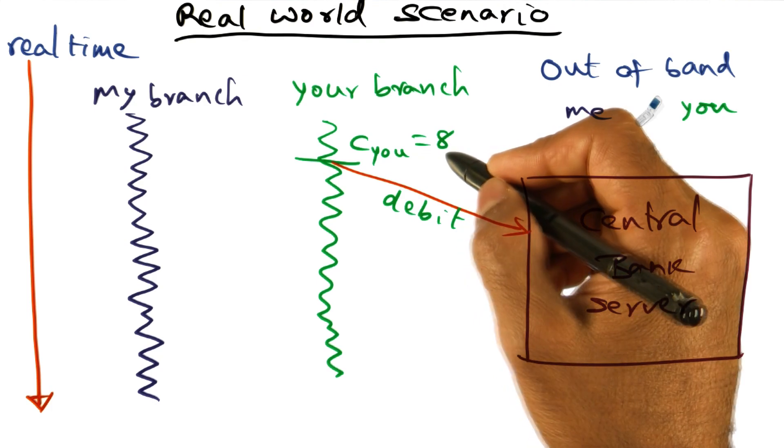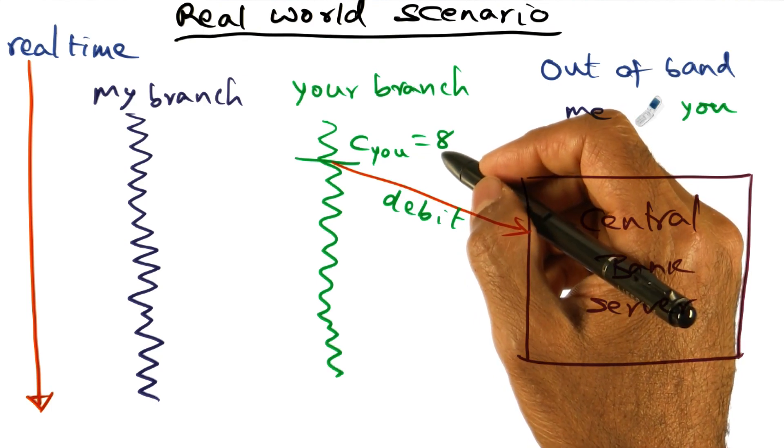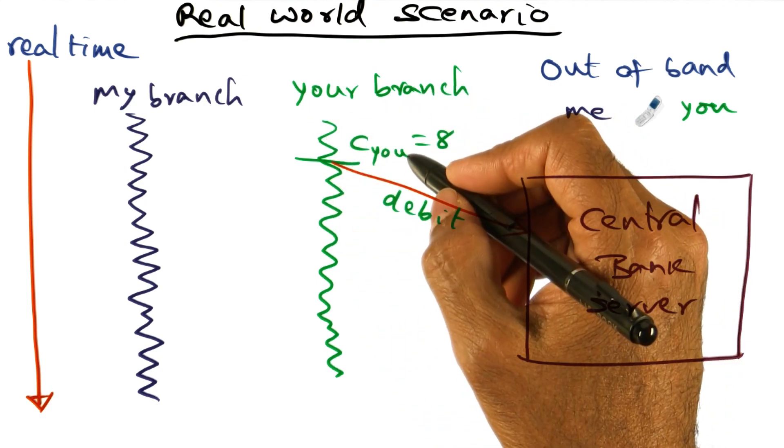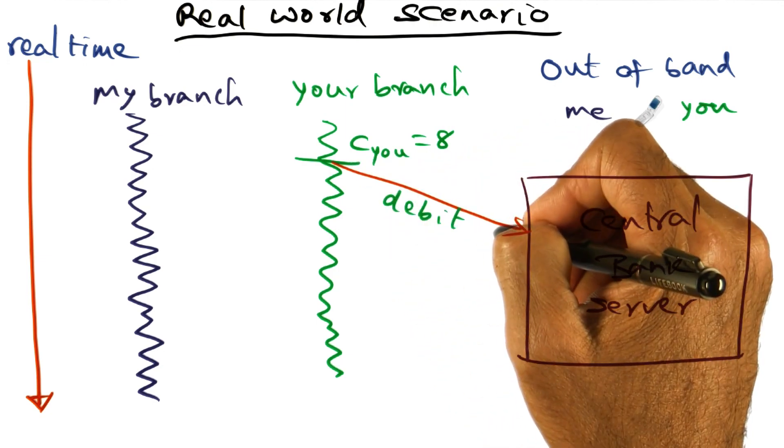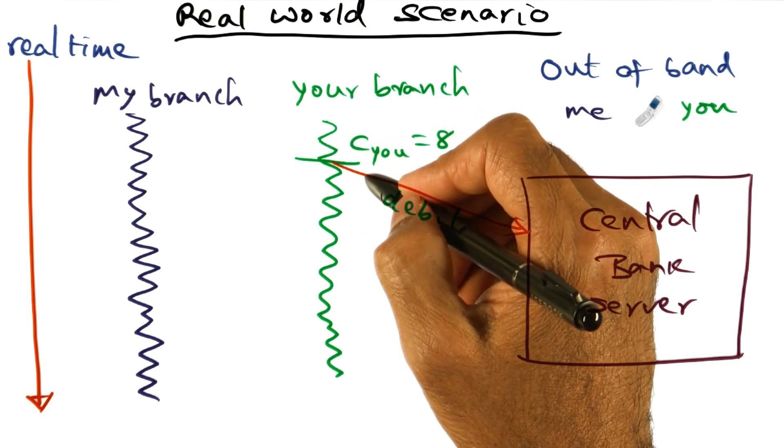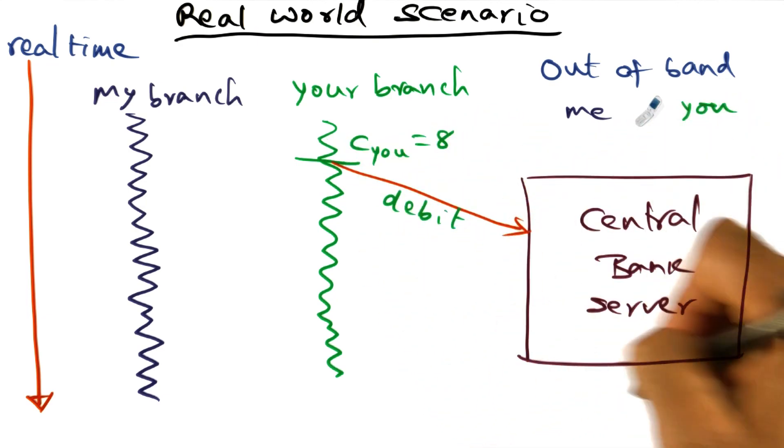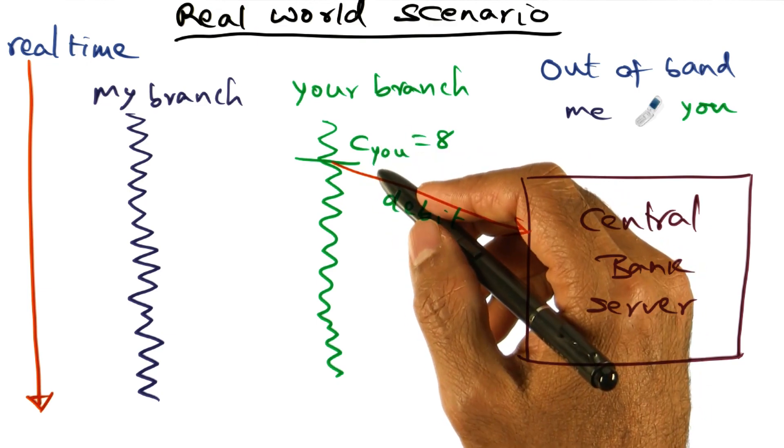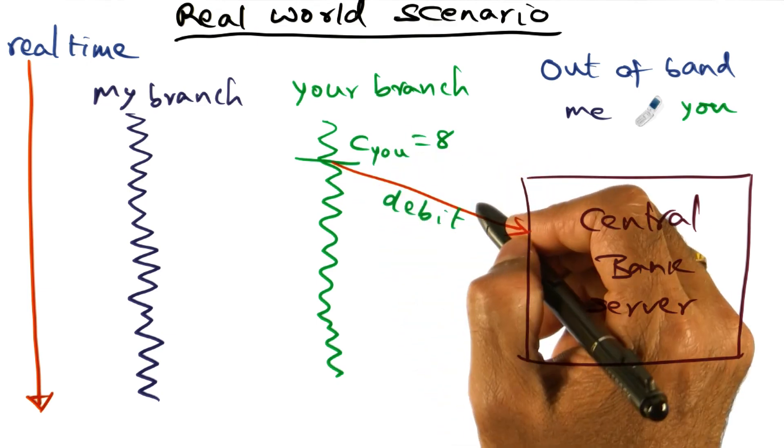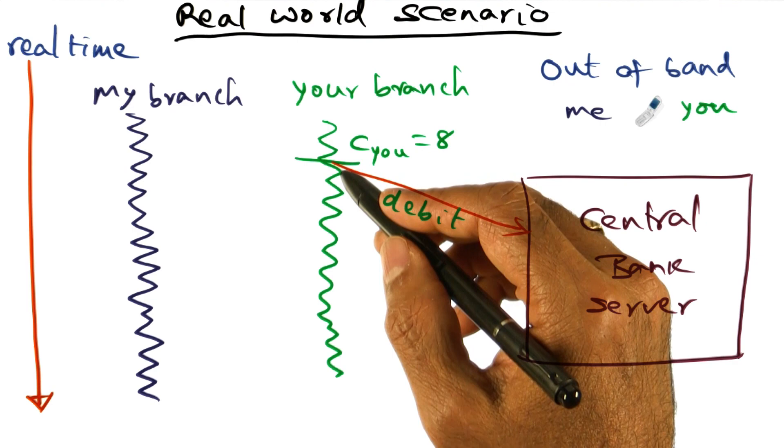Now you're a nice guy, so you want to give me some leeway. So you tell your branch that at 8 p.m., go ahead and debit from Kishore's account the money that he owes me. So your branch is going to basically do a debit call to the central bank server asking for the money that is owed by Kishore to be transferred to your account. So that's what is going to happen. And so you schedule that at 8 p.m.